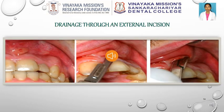For drainage using external incision, the abscess is first isolated using a sterile gauze. Then, using a number 15 scalpel blade, a vertical incision is made on the most fluctuant area of the swelling. This incision is gently widened to allow drainage of pus. After complete drainage of pus, the area is irrigated using saline and it is left open to heal. Antibiotics and analgesics can be prescribed after.